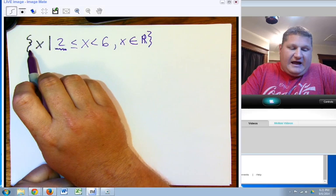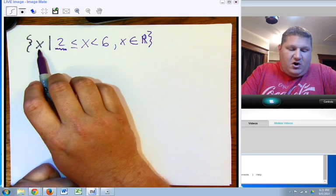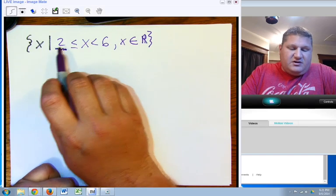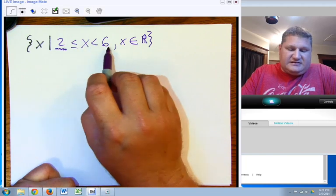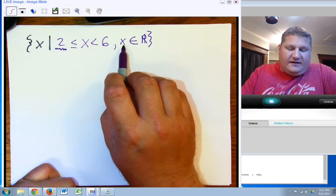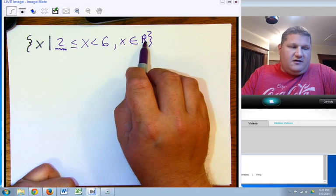It is a bracket. It says the set of all x such that 2 is less than or equal to x is less than 6 for all x's that are elements of the real number.